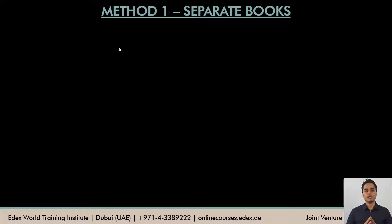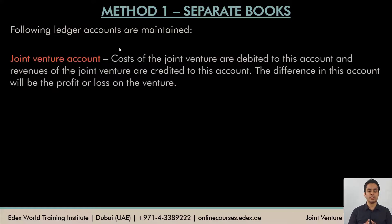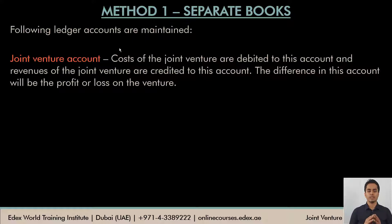In the first method, a separate set of books is maintained for the joint venture. The main ledger account is the joint venture account, which records all costs, incomes, and gains of the venture. Expenses and costs are debited to this account; incomes and gains are credited. At the end of the period, a net credit balance indicates profit, while a net debit balance indicates a loss on the joint venture.